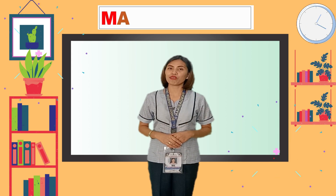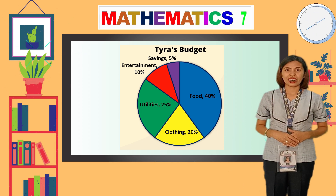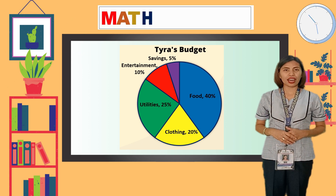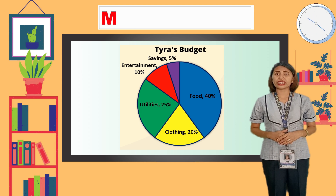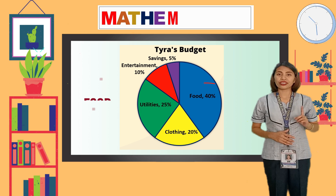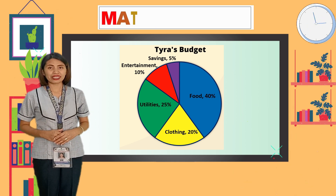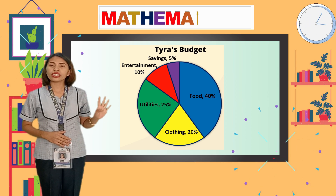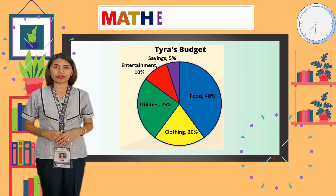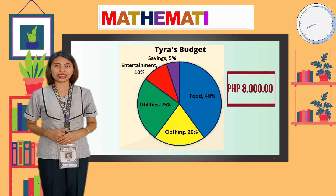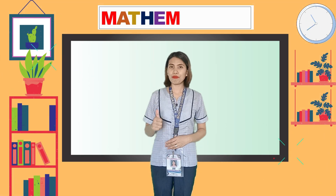It is now time to exercise our brain. Using Tyra's budget pie chart, let us answer the following questions. There are 5 sectors in the graph. Food accounts for the greatest expense. 5% of the budget is saved. If the allowance amounts to 20,000 pesos, the amount spent for food is 8,000 pesos, because 40% of 20,000 pesos is 8,000 pesos. Great job, magagaling students!